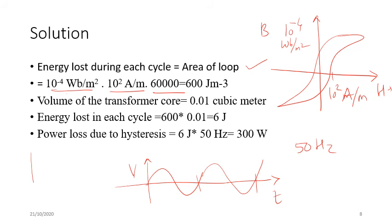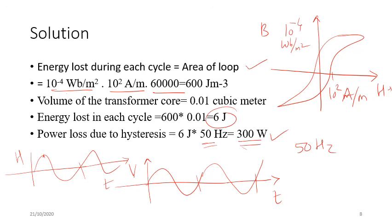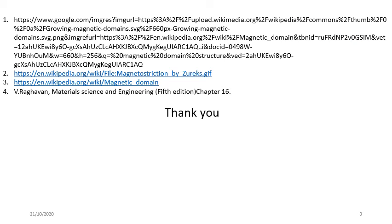In summary, we covered magnetic domains, the domain structure theory, the magnetostriction effect, the Vibrating Sample Magnetometer, the M-H and B-H hysteresis loops, and calculated hysteresis loss for a transformer core. The hysteresis loss of 300 watts was obtained from the B-H loop area. Thank you for watching this video, and the references used to create this presentation are listed.